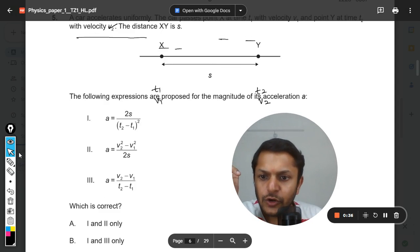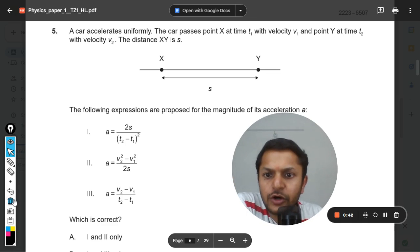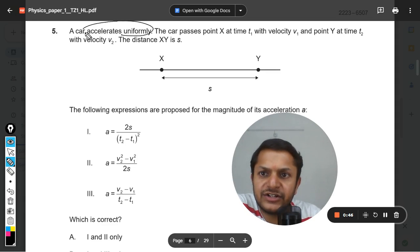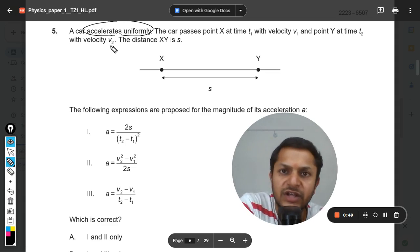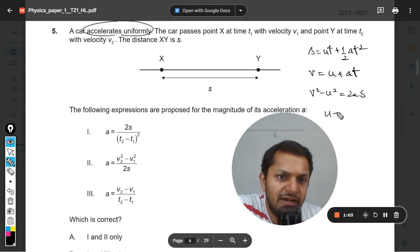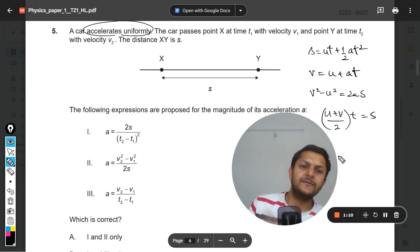So which is correct? We have to find the correct expression for the acceleration. Obviously because the acceleration is uniform, all these SUVAT equations are valid here. S equals ut plus half at square, v equals u plus at, and v square minus u square equals 2as. All these equations are valid. Also u plus v divided by 2 into t equals s, even that is available, no problem.